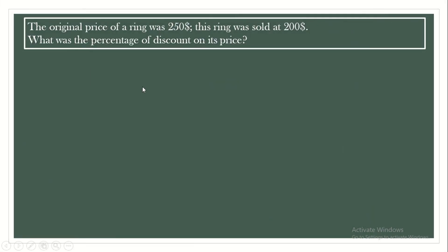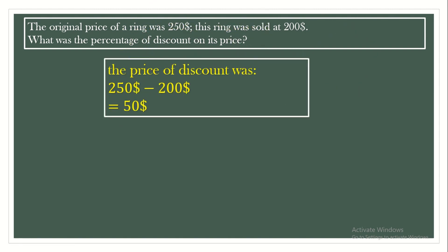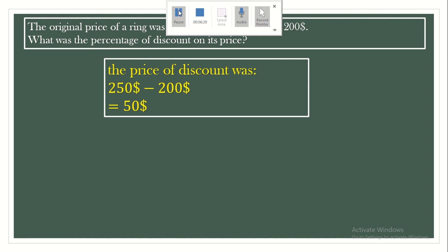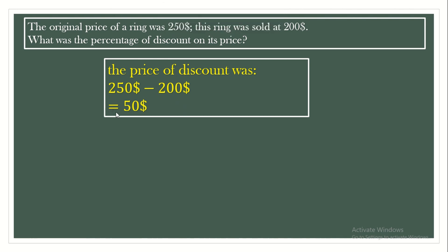Another question. Here we have the original price and the final sale price — we just need to find the percentage of discount. The original price of a ring was $250, and this ring was sold at $200. We have lost $50 from its price. So we have a discount. What was the price of the discount? It's $250 minus $200, which gives us $50.